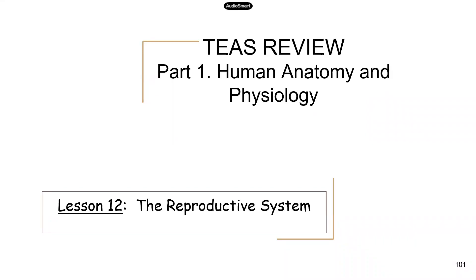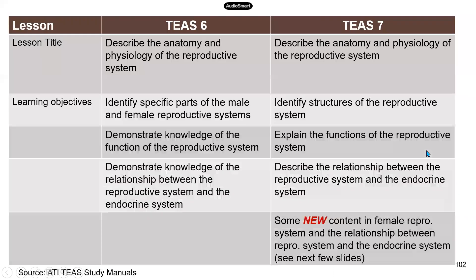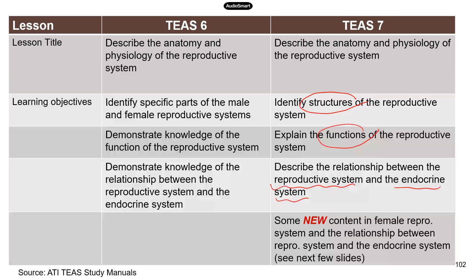Hey everyone! Today we're going to look at the reproductive system. This body system doesn't have too many updates. In TEAS 7, you still need to know the structures and the functions, and also the relationship between the reproductive system and the endocrine system. We'll talk about a few important hormones. I have discussed them previously in the TEAS 6 video, but we can go over them again because there are a few and it can get really confusing.